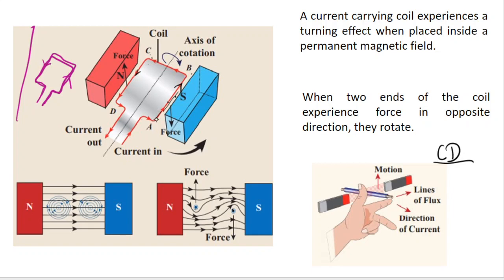Let us consider a current-carrying coil. One side of the coil has current flowing in one direction. Now, let us consider side C, D — using Fleming's left-hand rule, apply it to find the direction. Let the side C, D move in a certain direction — this is the line of flux.